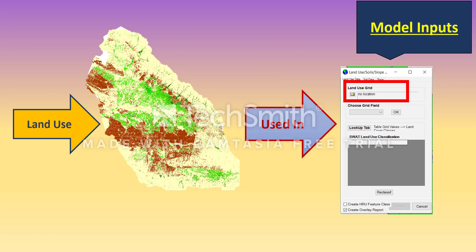Another SWAT model input you should provide is the land use map. Land use is an essential part of your SWAT model — it's very important to have an accurate map with all classes defined precisely. It's used when you define land use, soils, and slopes. The first thing the model loads is the land use data, so you upload your land use grid here.